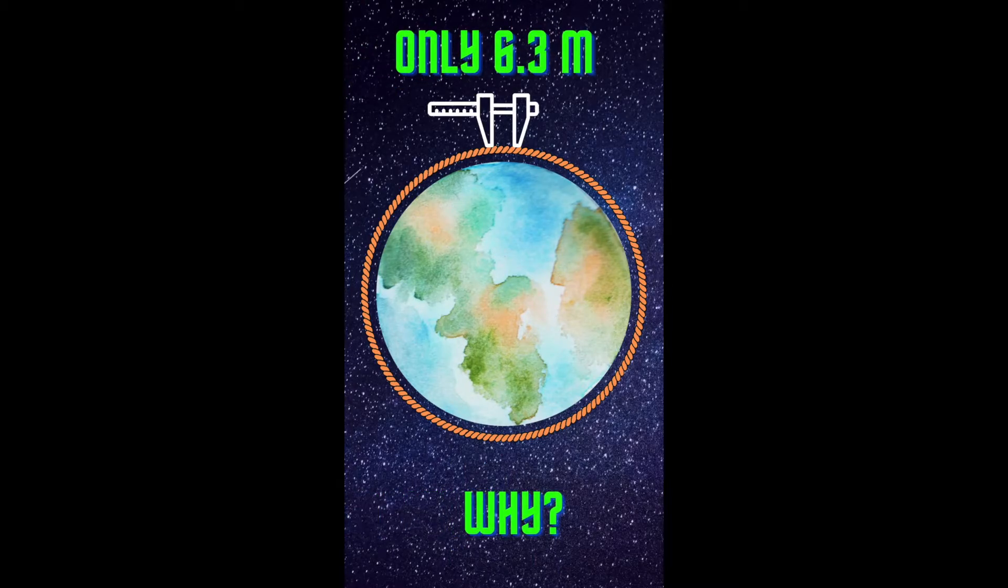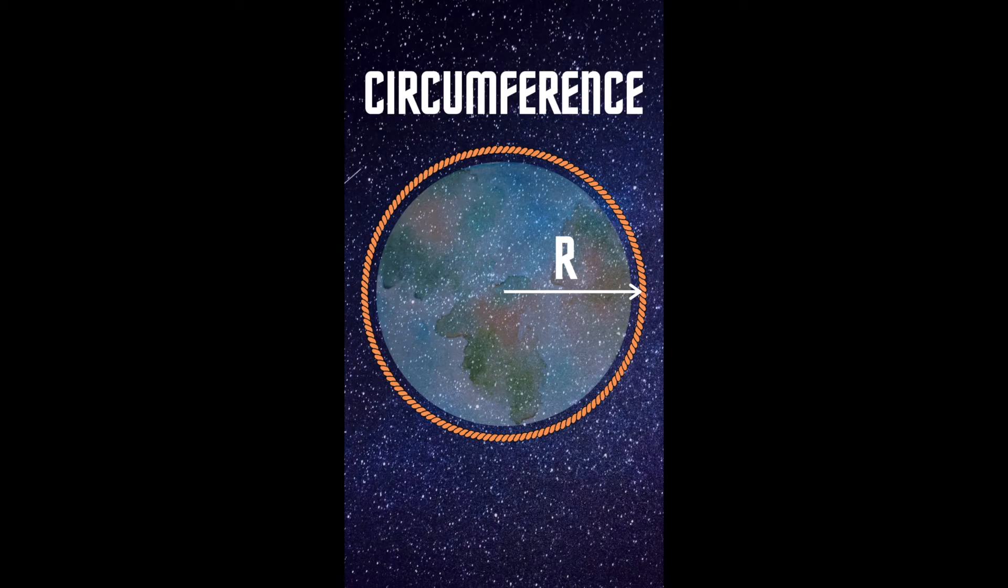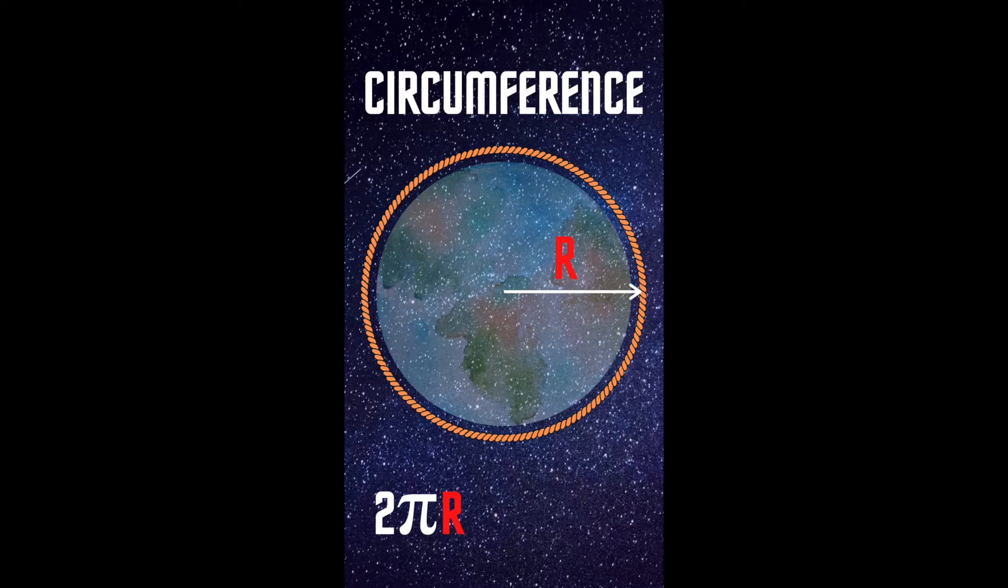Let's look at why this is the case. The rope forms a circle around the Earth, and you might remember the formula for the circumference of a circle is 2 times pi times the radius. Pi is just a number equal to around 3.14, and the radius is the distance from the center to the edge of the circle.